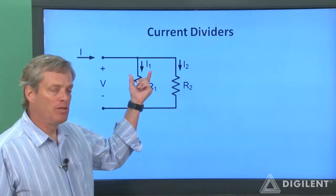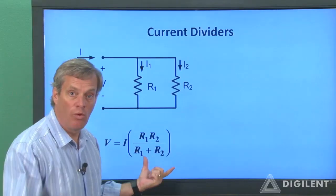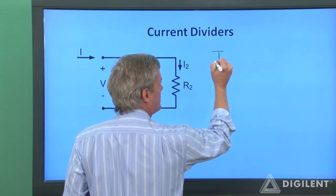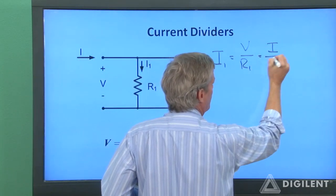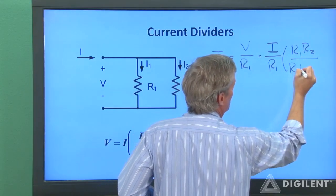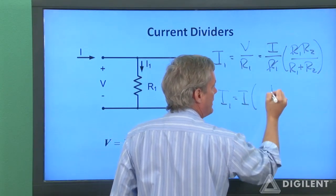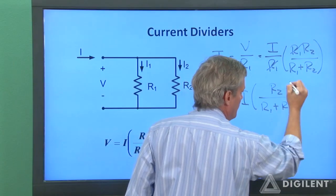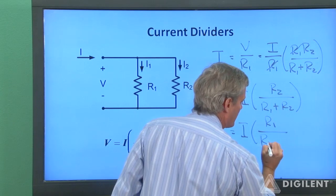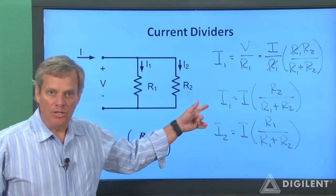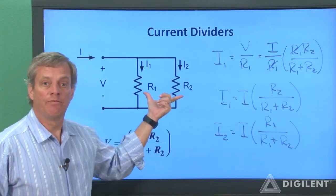Now let's find the individual currents I1 and I2 in our original circuit. The voltage across the two resistors is V = I × R1R2/(R1 + R2). Using Ohm's law, I1 = V/R1, so substituting: I1 = I × (R1R2)/(R1(R1 + R2)). The R1's cancel, giving I1 = I × R2/(R1 + R2). Repeating the same process for I2, we find I2 = I × R1/(R1 + R2). These are our current divider relationships.